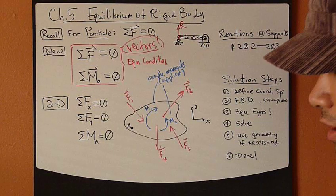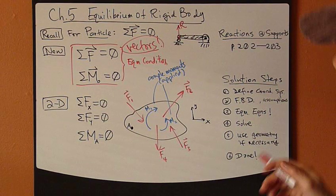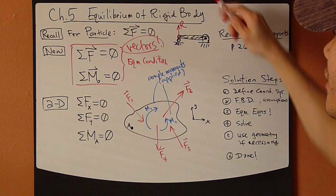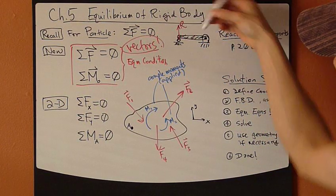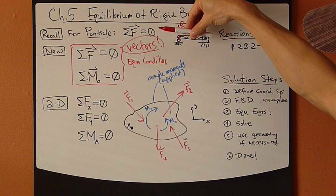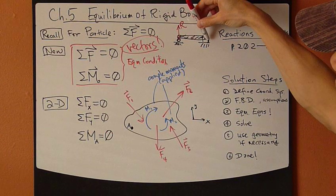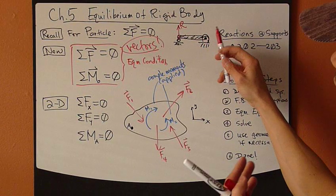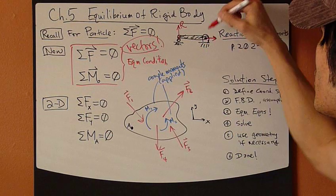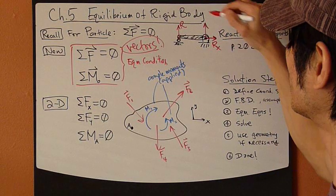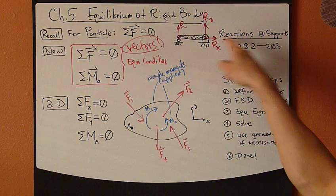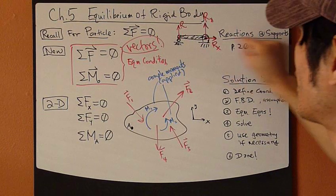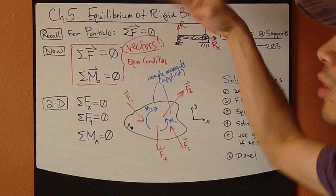Now consider this pivot on the other end — the rigid body is free to rotate. At this pivot point, we're constraining the motion of the rigid body in both the X and Y directions. Therefore, in each direction you have a reaction force: Rx and Ry. This point cannot displace or translate in the X or Y direction — it's fixed there — but it's free to rotate.